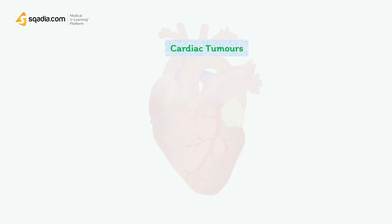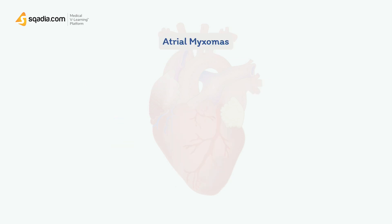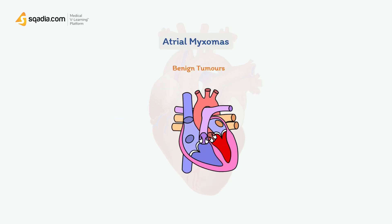Today we'll focus on cardiac tumors. The most common primary tumor in adults are the myxomas, with 90% of them occurring in the atria. Atrial myxomas are benign tumors — meaning they are non-cancerous.